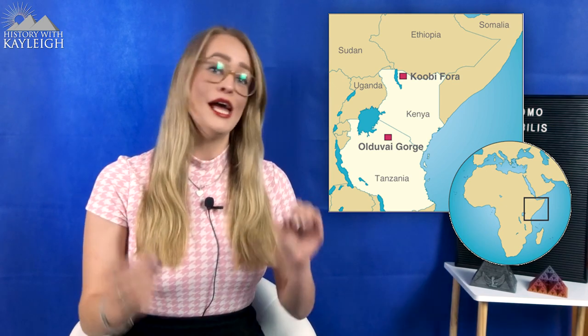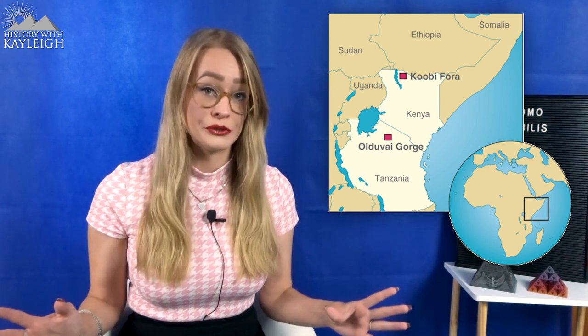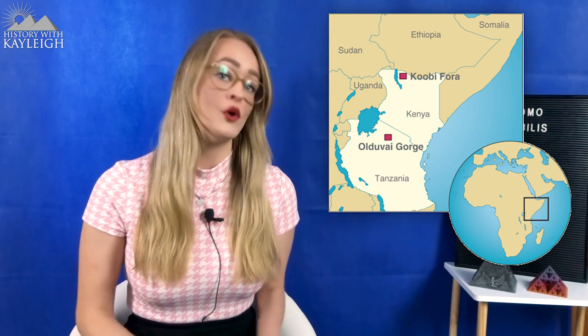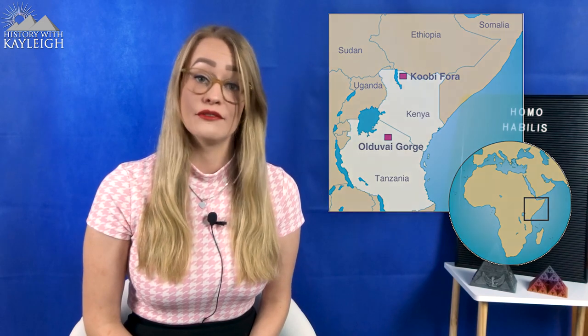The remains of Homo habilis were discovered at the Olduvai Gorge in Tanzania, one of the very most important paleoanthropological locations in the entire world. The gorge has played a significant role in our understanding of early human evolution. 45 kilometers south of the gorge are the Laetoli footprints, which are amongst the oldest fossilized footprints ever discovered.